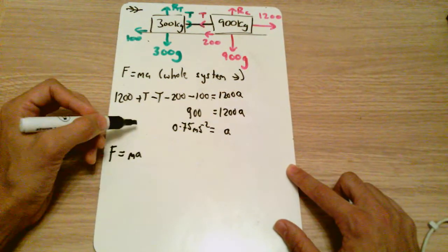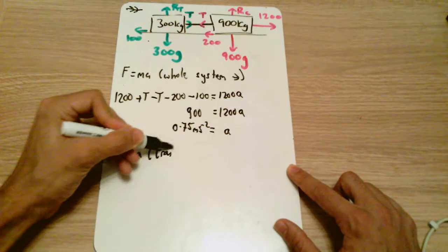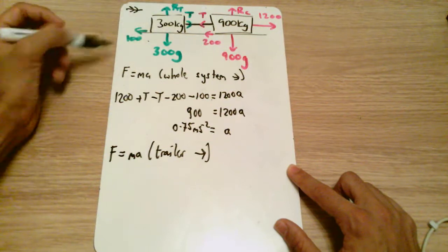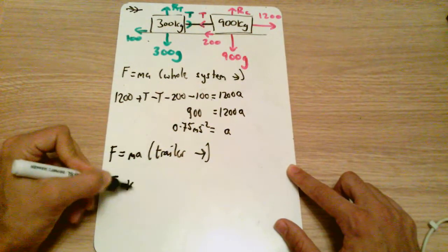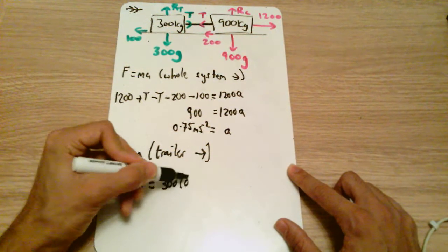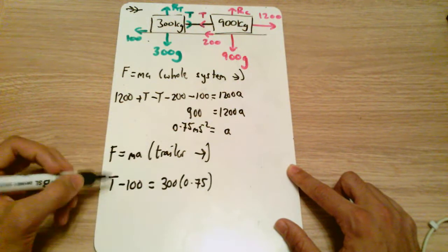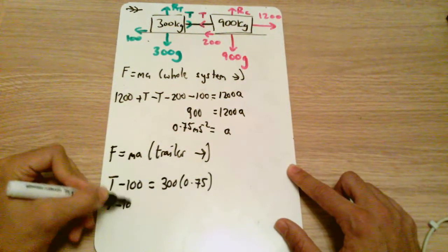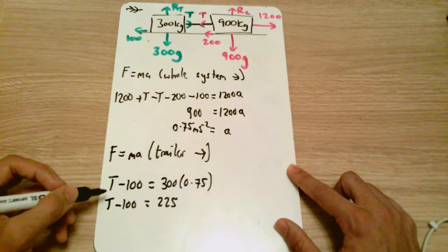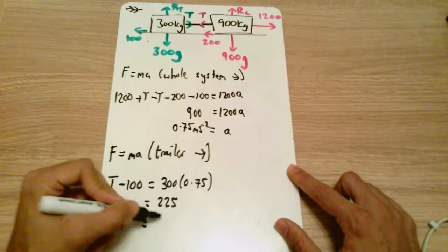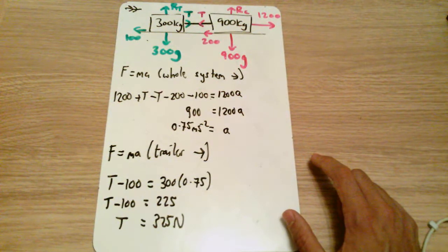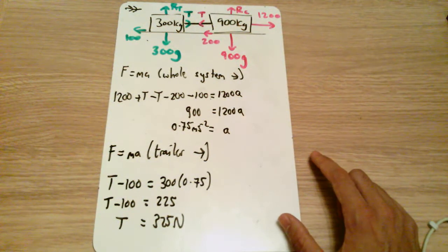I am just going to do this on the trailer because there are less forces to deal with. So F equals ma on the trailer to the right. The forward force here is T, the negative force is 100, that's T minus 100 equals 300 times by 0.75. That gives us T minus 100 equals 225 and therefore T equals 325 newtons. That's part a and part b, as I said most people are generally fine with that.